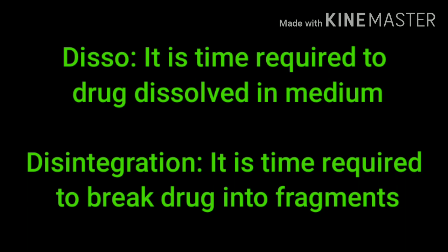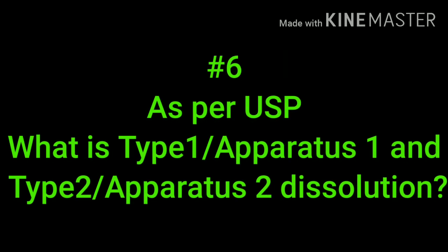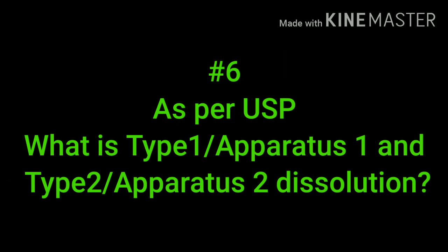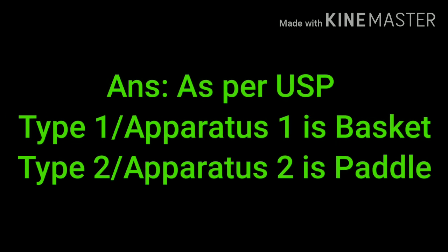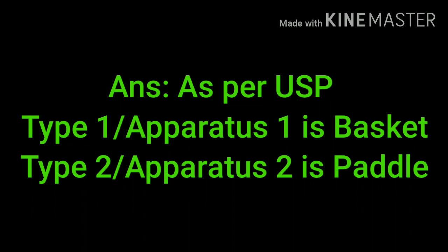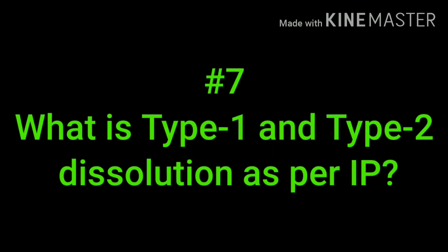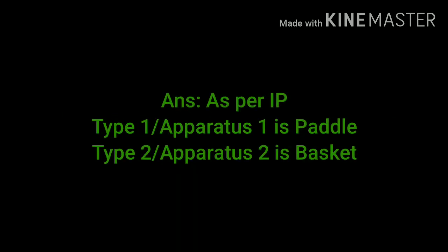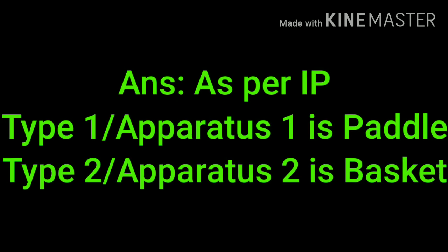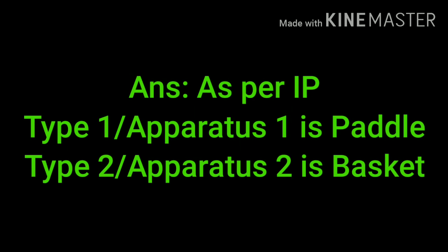As per USP, what is Type 1 and Type 2 dissolution apparatus? As per USP, Type 1 is Basket and Type 2 is Paddle. As per IP (Indian Pharmacopoeia), it is vice versa — Type 1 is Paddle and Type 2 is Basket.